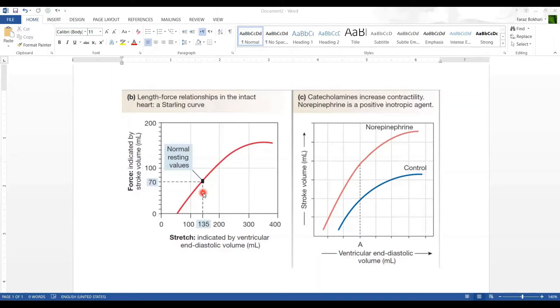When the venous return comes back to the heart, the blood accumulating during diastole in the ventricle will tend to stretch the myocardium. The more blood that comes into the ventricle, the more the stretch. This stretch is a function of end diastolic volume.